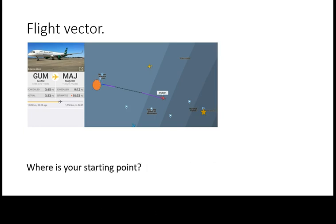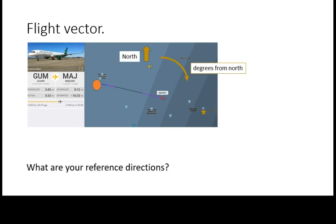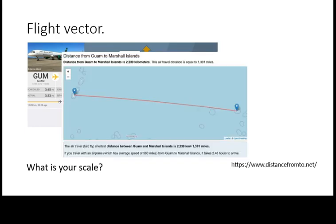Again, we need to establish our starting point. Next, we need a reference direction. In flight navigation, the convention is that the reference direction is north and degrees are counted clockwise from it. Finally, we need to establish the exact scale, so we know how much fuel to use.